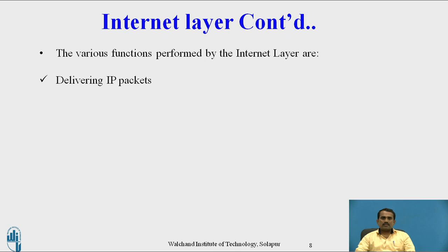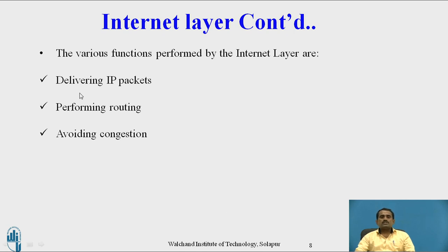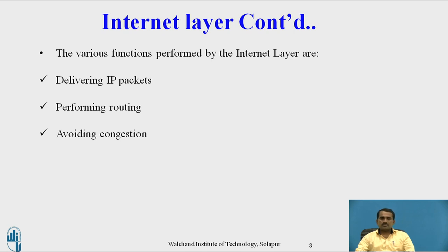The various functions performed by the Internet Layer are: delivering IP packets, performing routing, and avoiding congestion. Delivering a packet means that before transmitting data from source to destination, the user must specify the destination information, and the data is then delivered to the destination independently. Performing routing means transferring packets through routers. Avoiding congestion means that if the sending speed is very high and receiver speed is very slow, a congestion problem may occur. If the sending and receiving speeds are kept equal, congestion can be avoided.